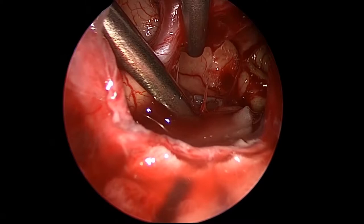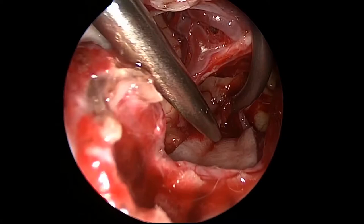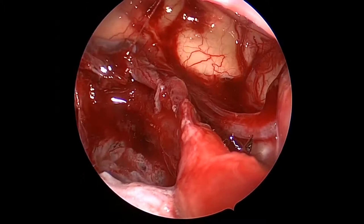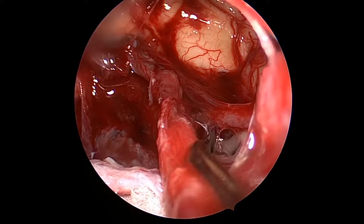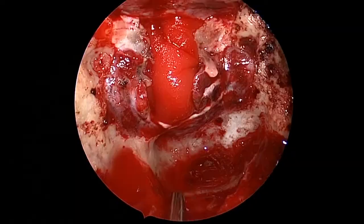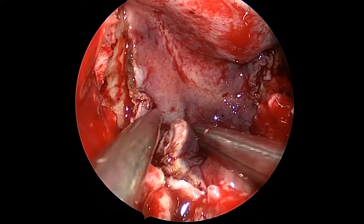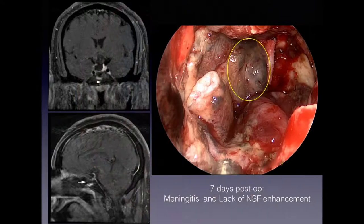Now looking up with a 45-degree endoscope into the retrochiasmatic space, we can see the severe mass effect on the optic chiasm and the last residual tumor. At this point we have completed the resection of the tumor. We can see the posterior communicating artery on the left side, all the perforating branches, and the stalk going up to the third ventricle. We then proceed with reconstruction using a fat graft, a Duragen layer, and a nasoseptal flap.